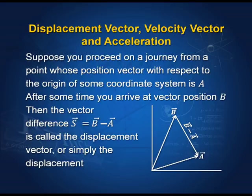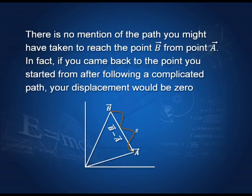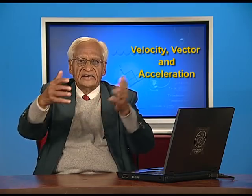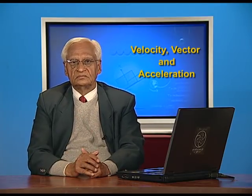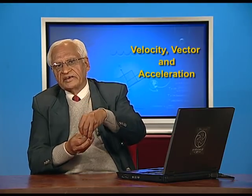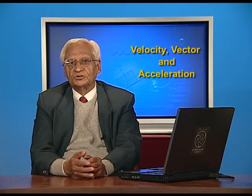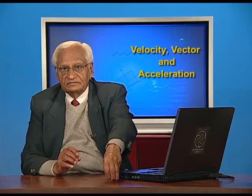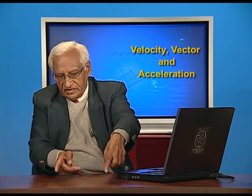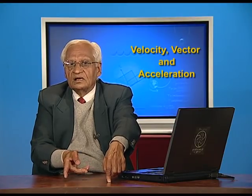It is called displacement vector, or simply displacement, but you must remember that it is a vector. Notice that we have not said anything about the path taken between position A and position B. In fact, if you started at point A, took all kinds of curves and paths, and came back to point A, your displacement would be zero, because the difference between the final vector and initial vector is zero. So the path does not matter — what matters is the final position and the initial position, and the difference between these two positions is the displacement vector.